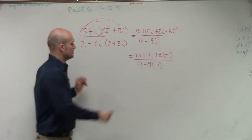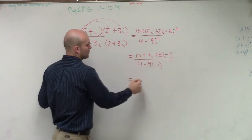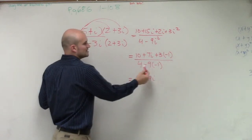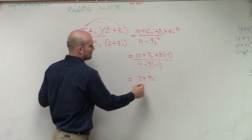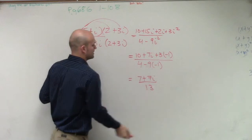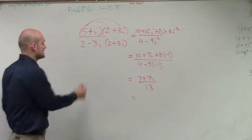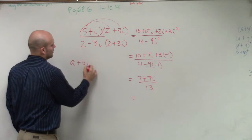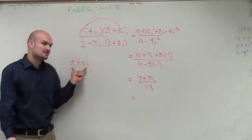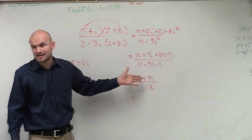So therefore, the numerator simplifies — this turns into negative 1, giving us 7 plus 17i, and the denominator becomes positive 13. If you want to rewrite it as a complex number, complex form is always a plus bi.